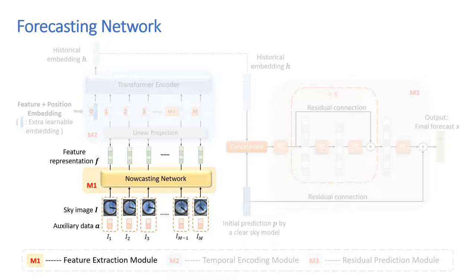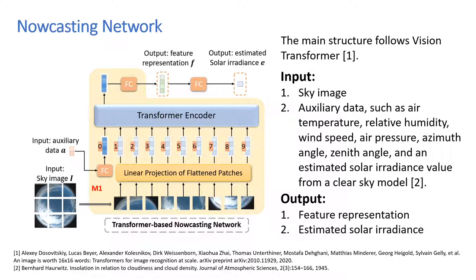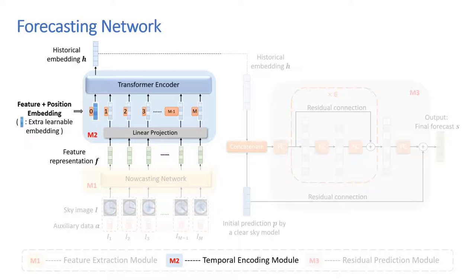In the feature extraction module, we use a pre-trained nowcasting network to extract features from each input image. The main structure of our nowcasting network follows the classical vision transformer structure. Given a sky image and some auxiliary information, this network extracts the feature representation and estimates the corresponding solar irradiance for each time instance.